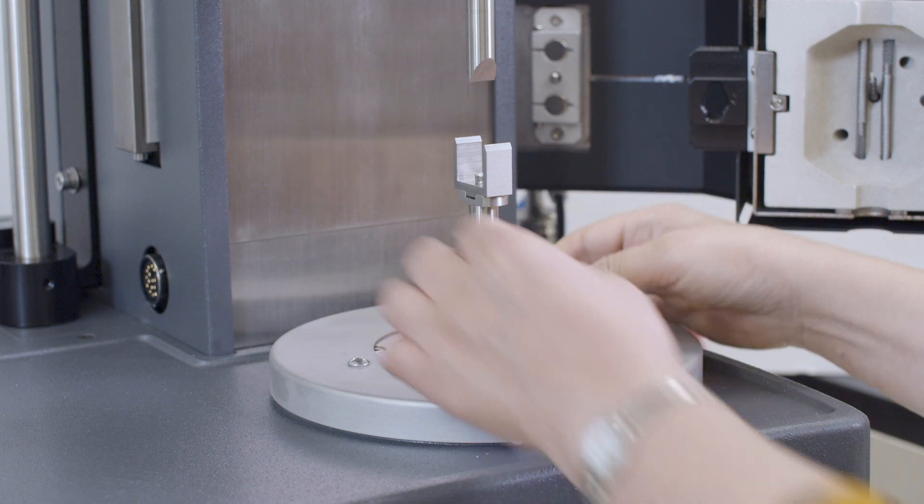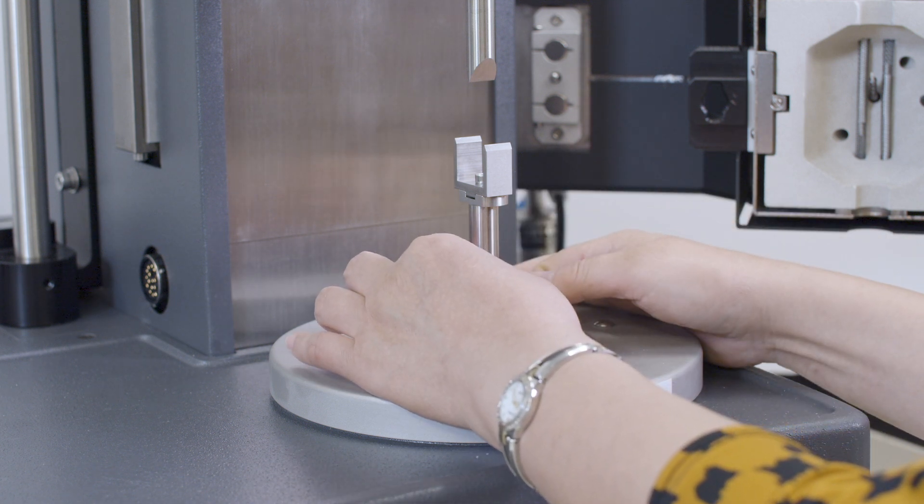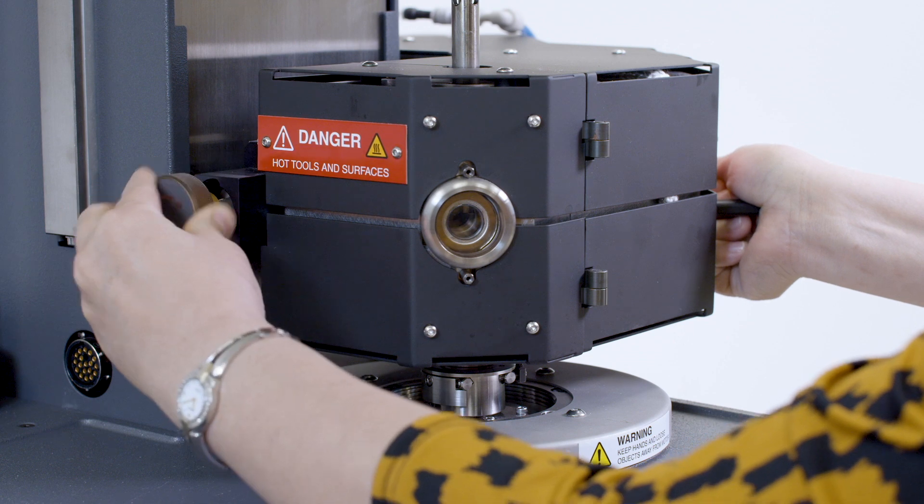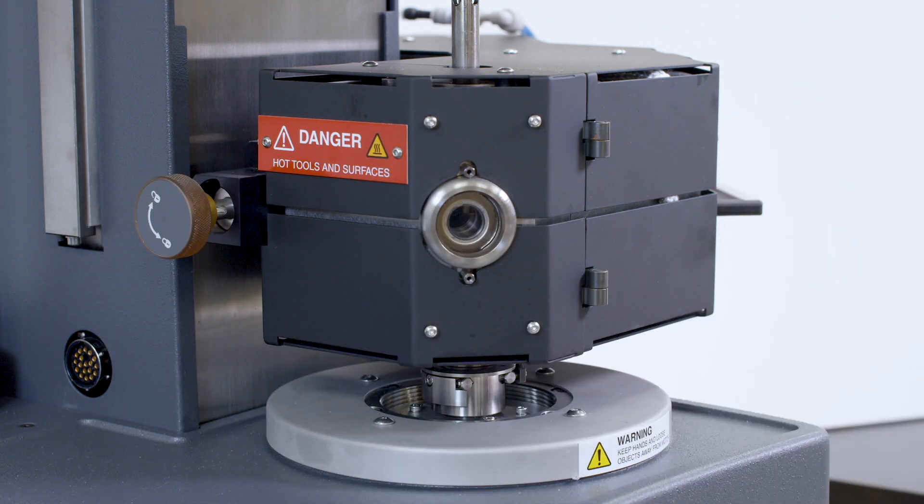When mounted on the ARES-G2, the three-point bending clamp is used in tandem with the forced convection oven for temperature control.